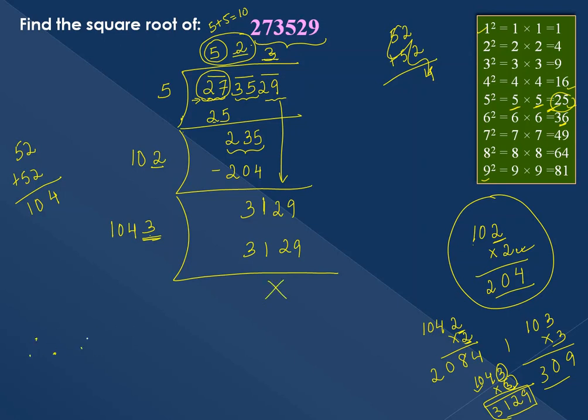Therefore, the square root of 273529 is 523. The final answer for the square root of this number is 523. This is how to find the square root using the long division method.